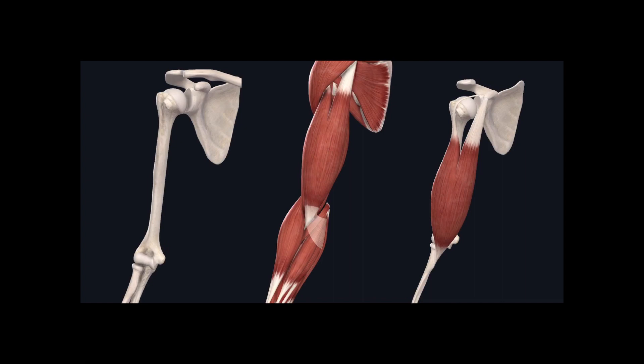Hey guys, welcome to another anatomy video. Today I'll be covering the muscles found in the brachium. If you watched my last video, you saw how I identified the origin, insertion, and action of each muscle. Today I'm not going to take as much time explaining that process — I'm going to identify them and write them out for you. If you don't know how I analyze muscles, go ahead and watch my last video. I just don't want these videos to be more than 20 minutes long so you can study more efficiently.